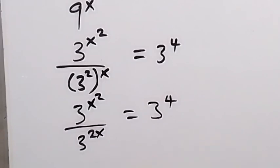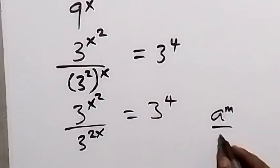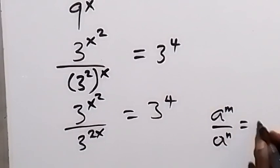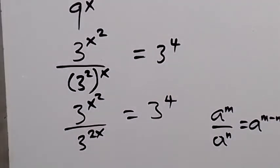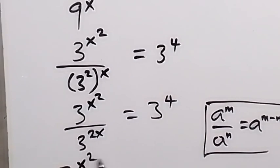And applying the law of indices from here, when we have a raised to power n divided by a raised to power m, this will give us a raised to power n minus m. So from here, when we apply this law, then we can subtract what we have, and this will be 3 raised to power x squared minus 2x equals to 3 raised to power 4.